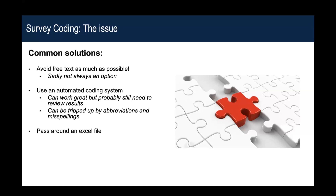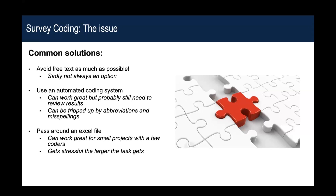A lot of groups just pass around an Excel file — here's the text, go assign a code. This is sort of the obvious thing that people will do. If you don't have a ton of things, it can work fine. But it can get a lot more difficult the bigger the task is and especially if you have a lot of people who need to work on the same data — the management burden gets a lot higher.